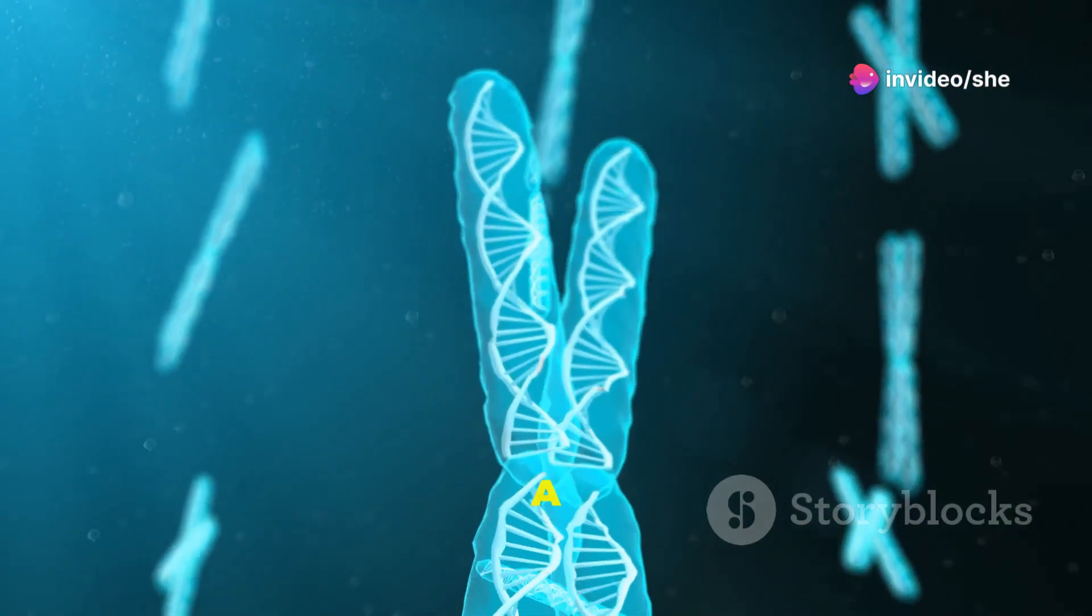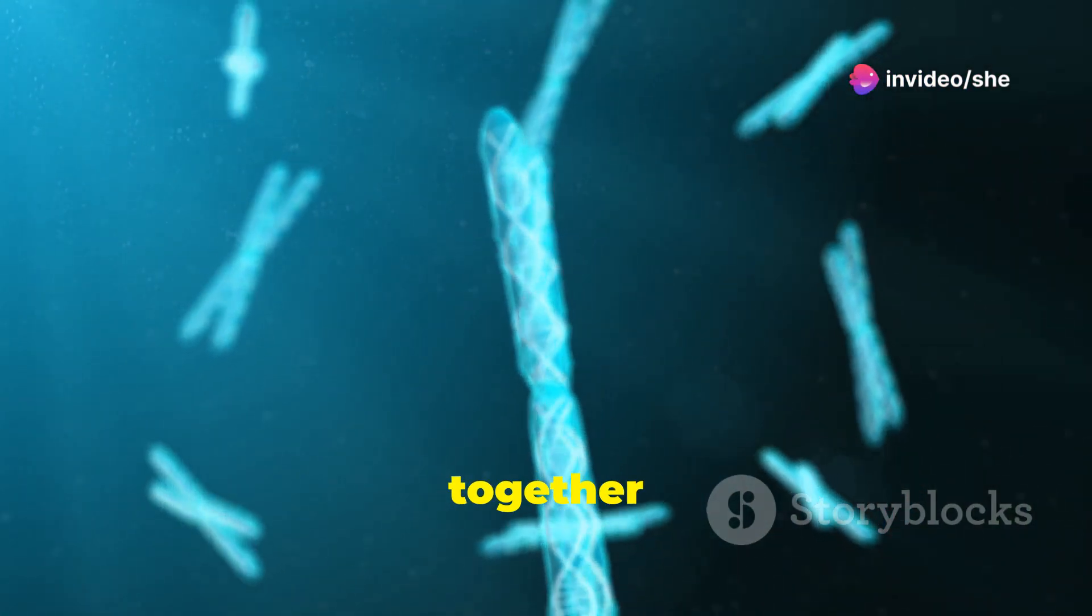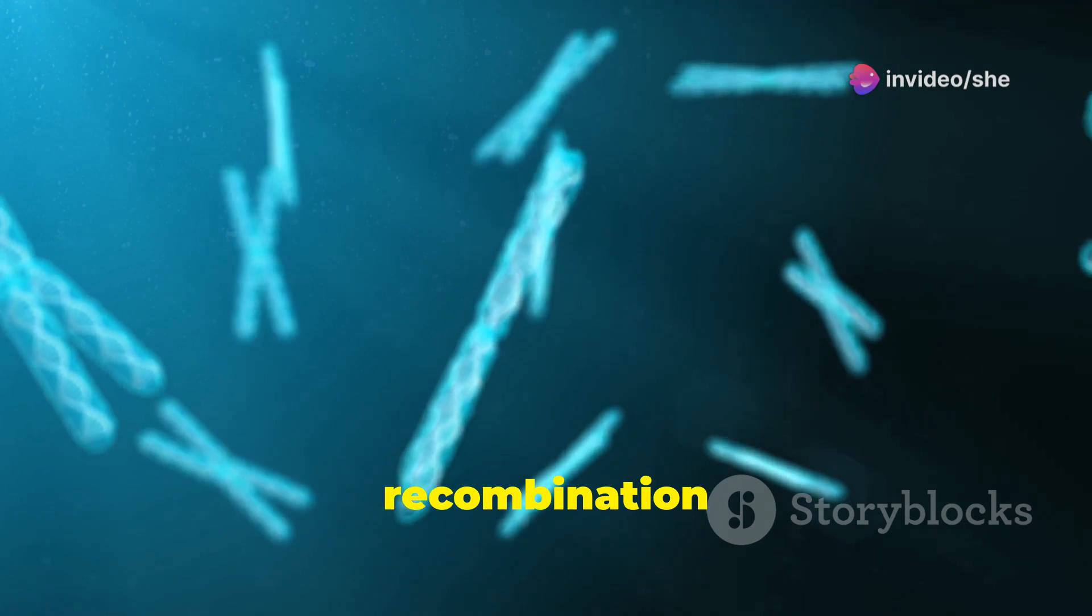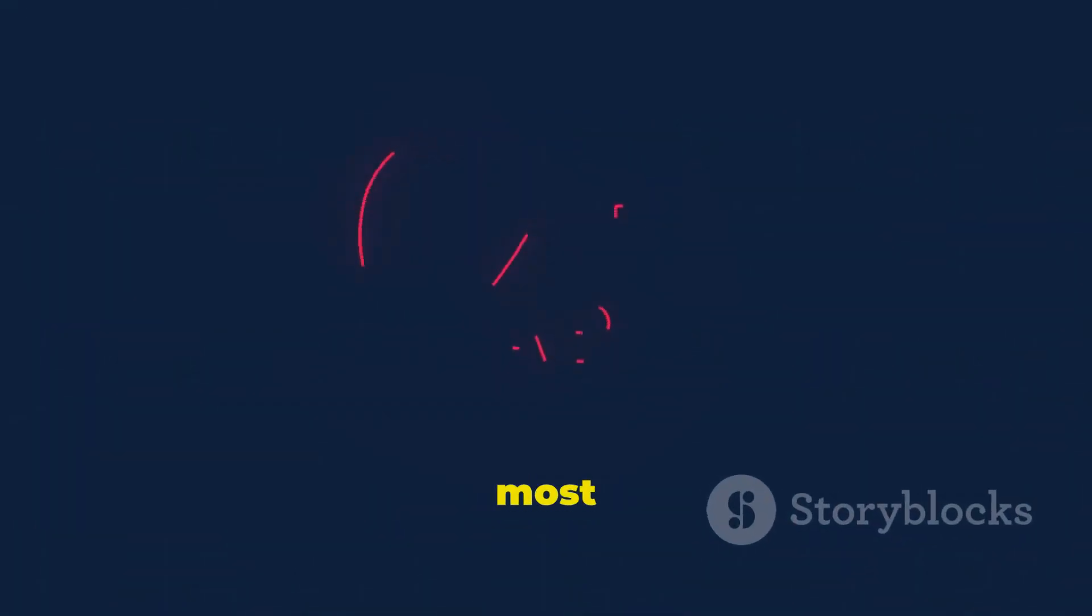Example. If two genes, A and B, are located close together on a chromosome, the recombination frequency between them will be low. This means that most of the offspring will have the same parental combinations of alleles, AB or ab.